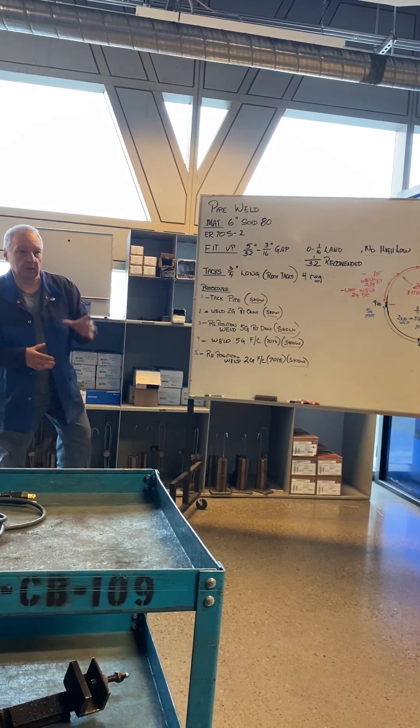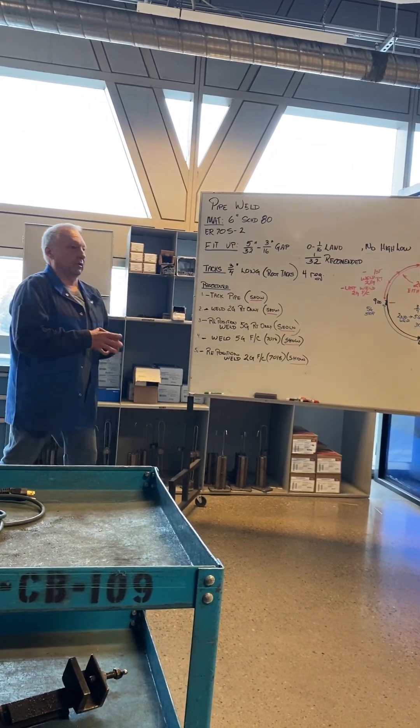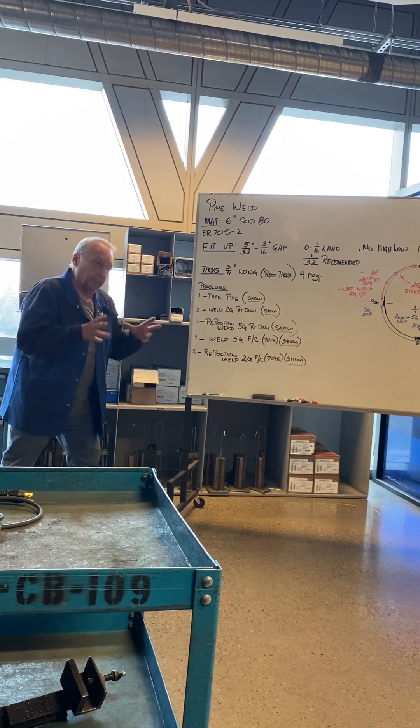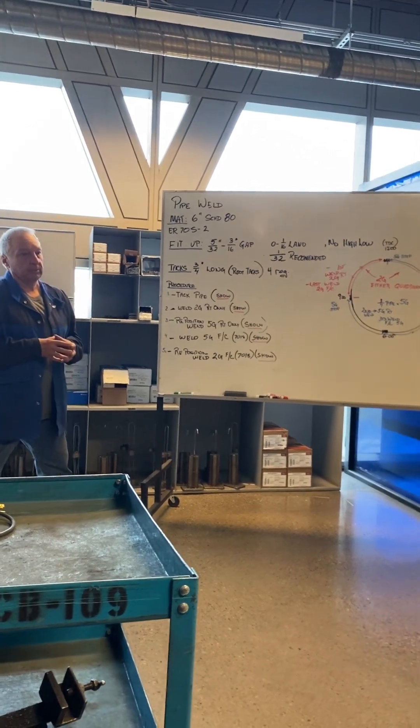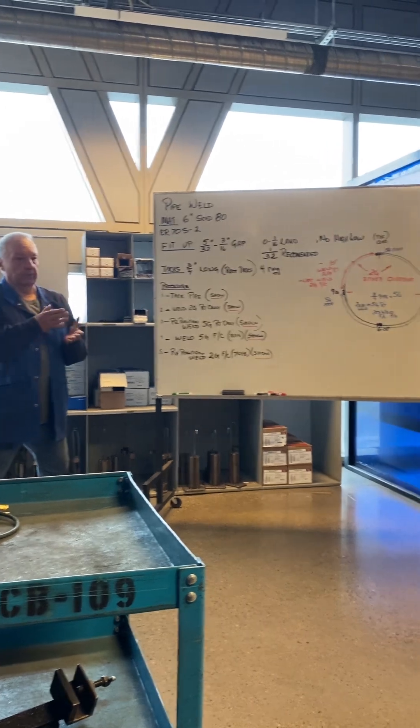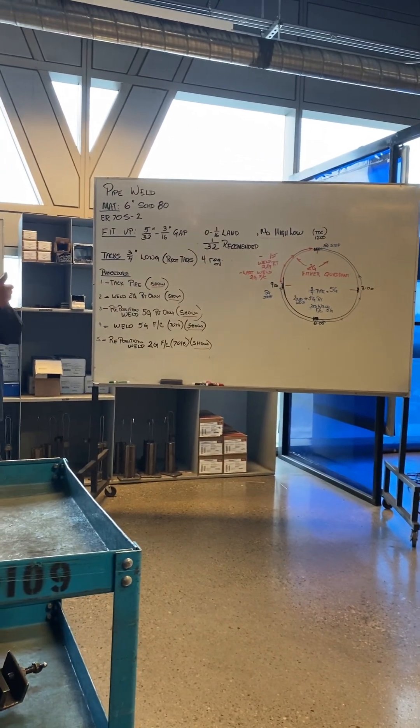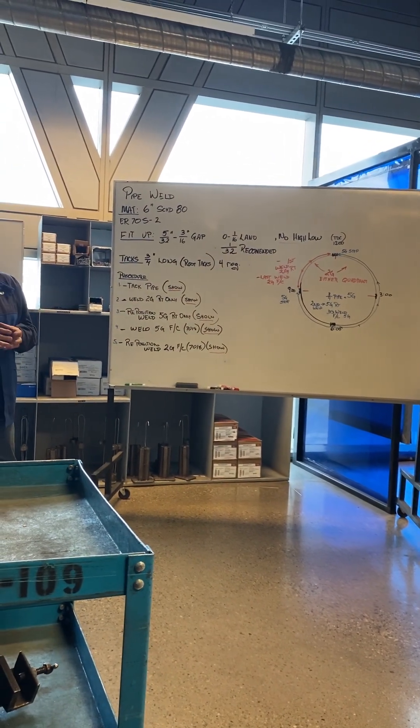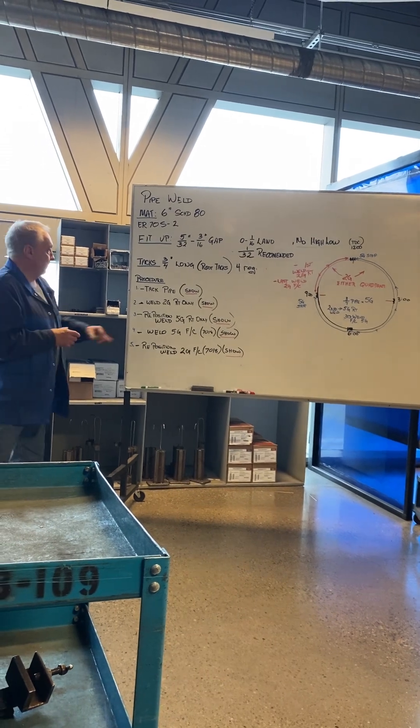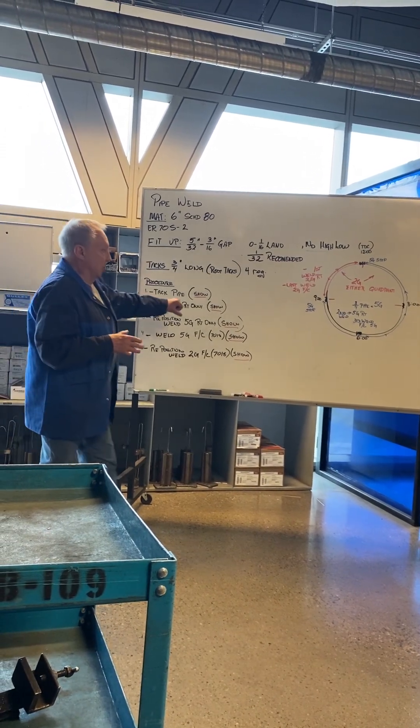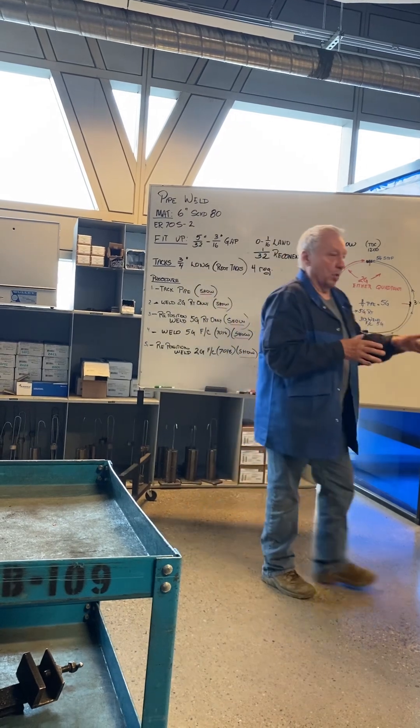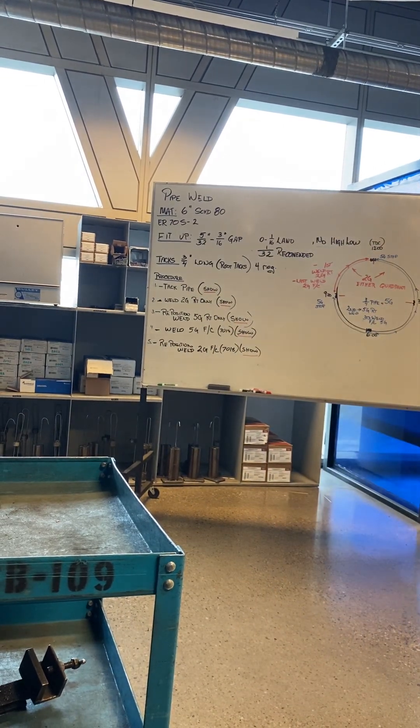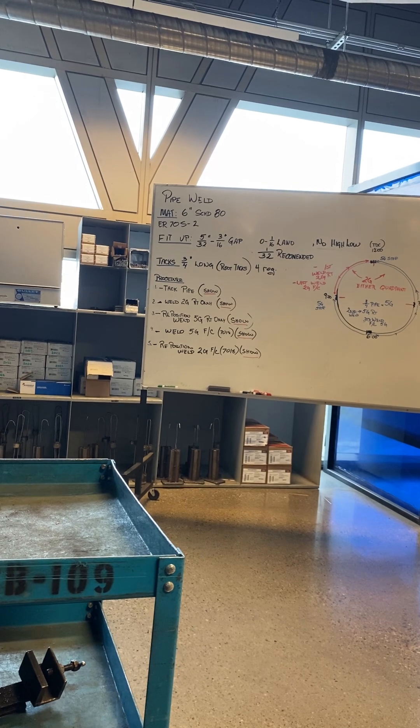Our tacks. We've got three little jigs back there that you just drop your pipe in. You only have to drop one of them in, and you end up tracing out your quadrants with your 3/4-inch tacks. You've got it all tacked up. Your first weld is the 2G position, so it's done in this position, and only a quarter of the pipe.